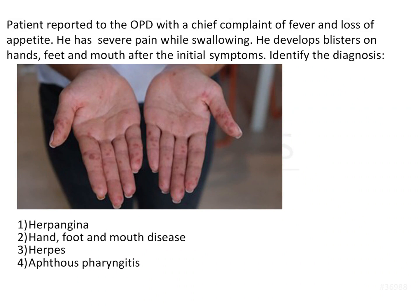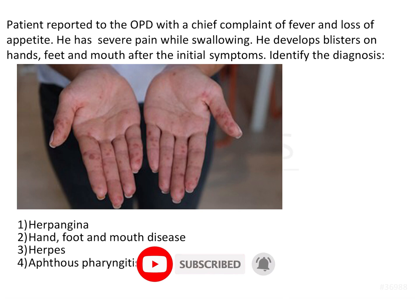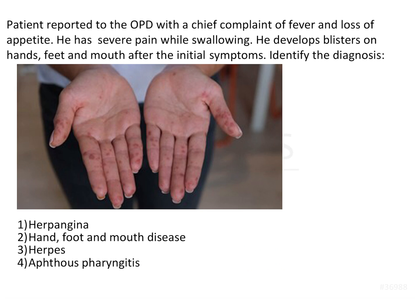A patient reported to the OPD with chief complaints of fever, loss of appetite, and severe pain while swallowing. The patient develops blisters on hands, feet, and mouth after the initial symptoms. Identify the diagnosis. The clue is in the question itself — it mentions hand, feet, and mouth, which is the name of the disease the patient is suffering from.